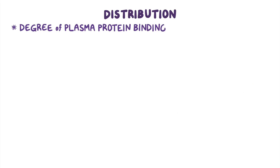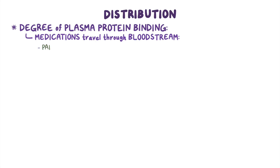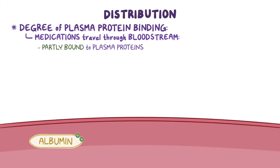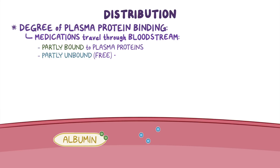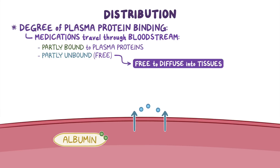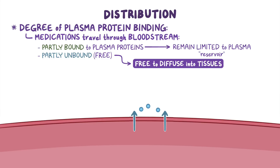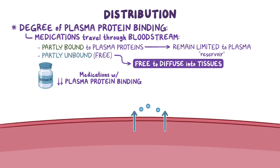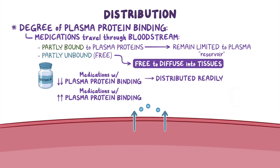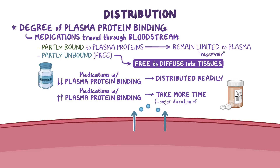Another factor affecting distribution is the degree of plasma protein binding. Medications travel through the bloodstream partly bound to plasma proteins like albumin, and partly unbound or free. Only the unbound fraction is free to diffuse into tissues, whereas medication molecules that are bound to plasma proteins remain limited to the plasma, acting as a kind of reservoir. That's why medications with lower plasma protein binding, such as gentamicin, get distributed readily in the tissues, while medications with higher plasma protein binding, such as warfarin, take much more time to free themselves and diffuse, giving them a longer duration of action.